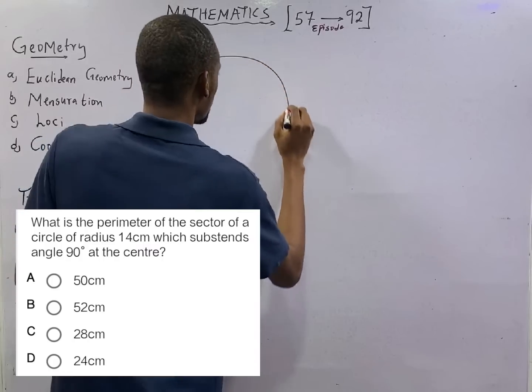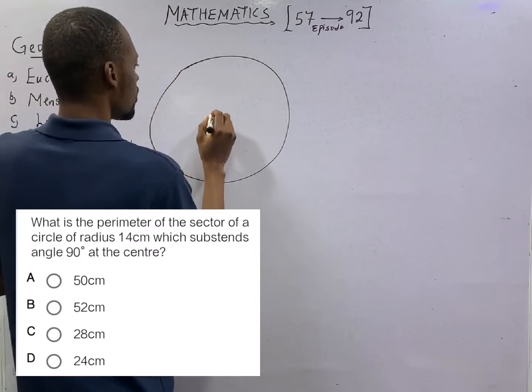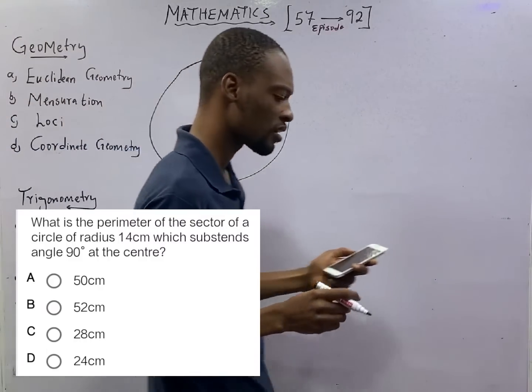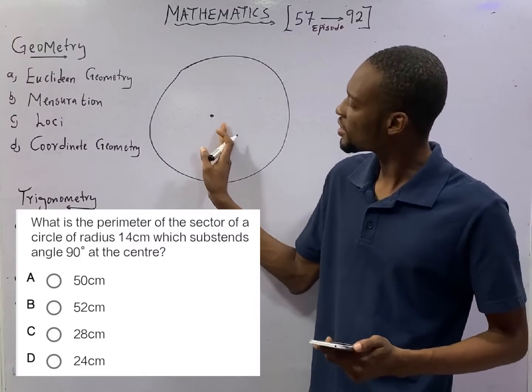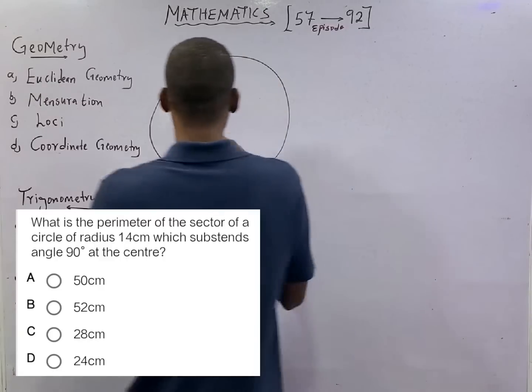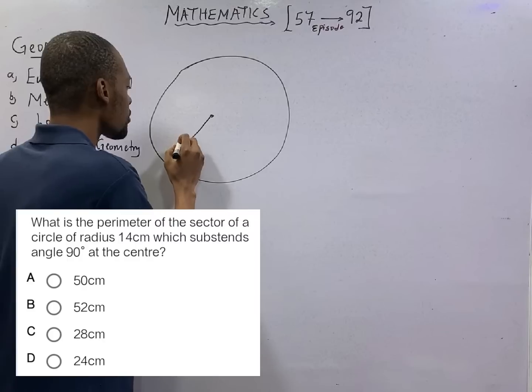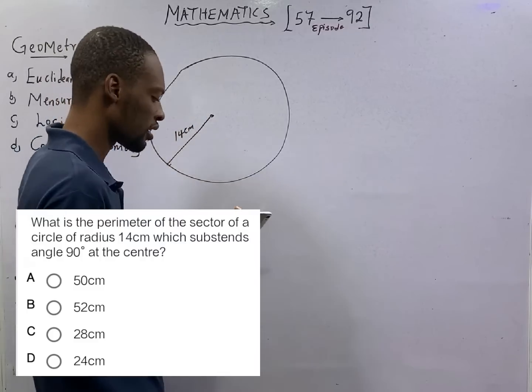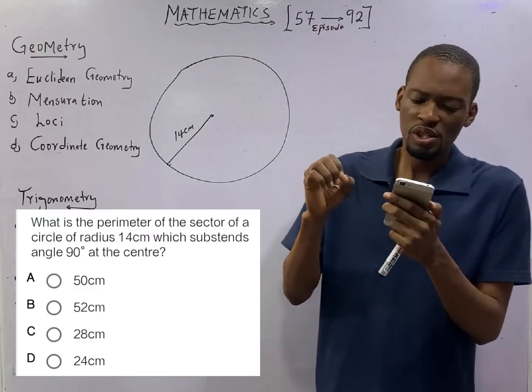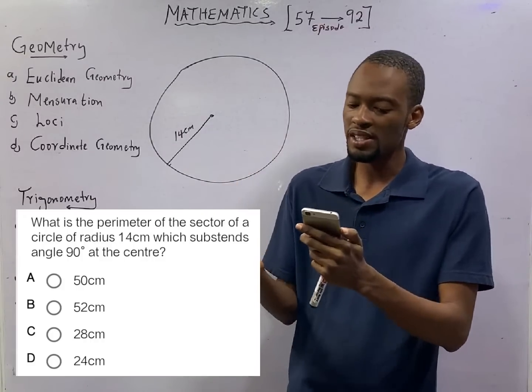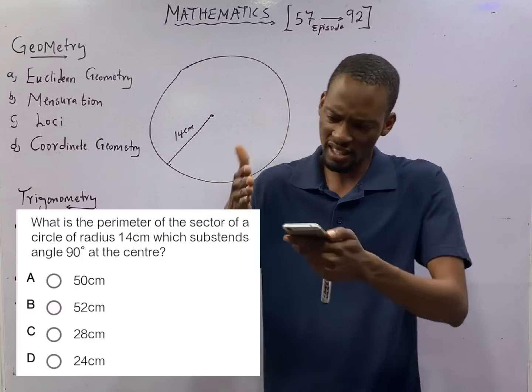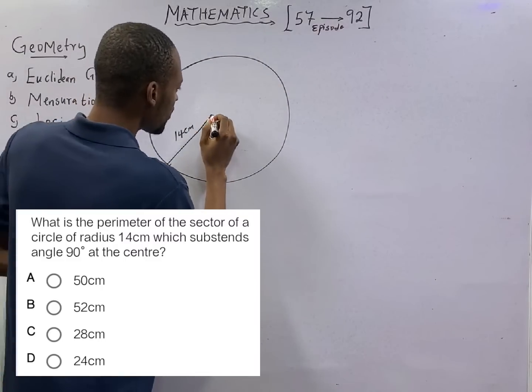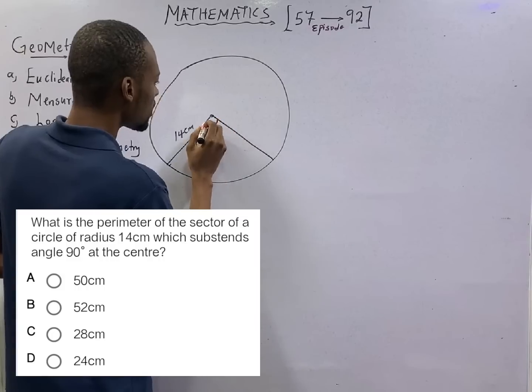This is a circle. This is the center. And we have that the radius is 14 cm. Radius is the distance from the center of the circle to any part. If we are drawing here like this, this is radius and the radius here is 14 cm. And we further went ahead to say that it subtends an angle of 90 degrees. There can't be an angle unless there is a meeting point of two lines. For this to subtend an angle here, it means there is another radius coming down here to form an angle of 90 degrees.